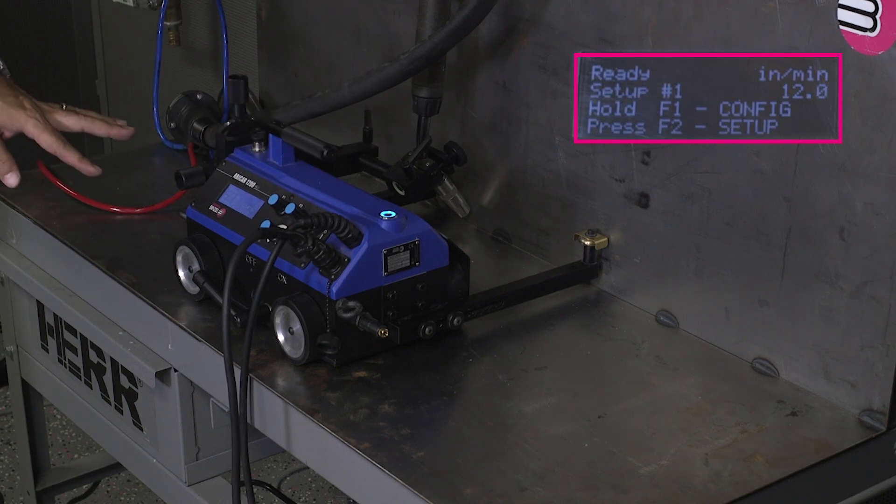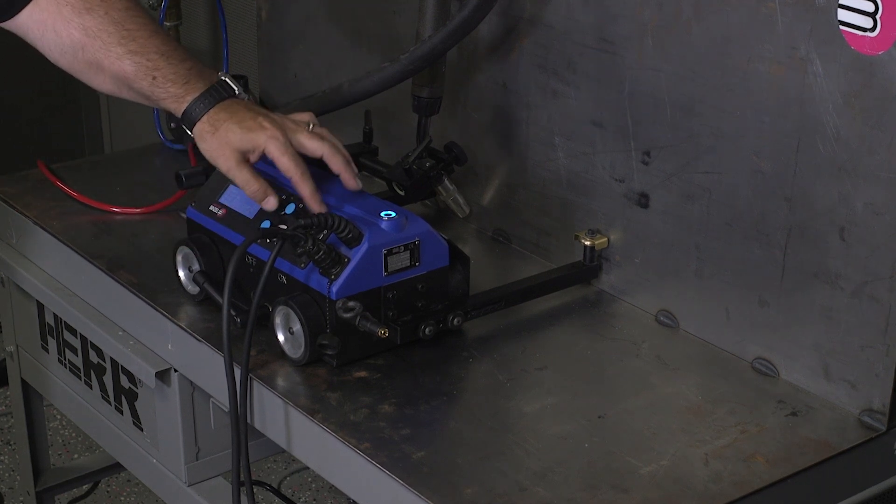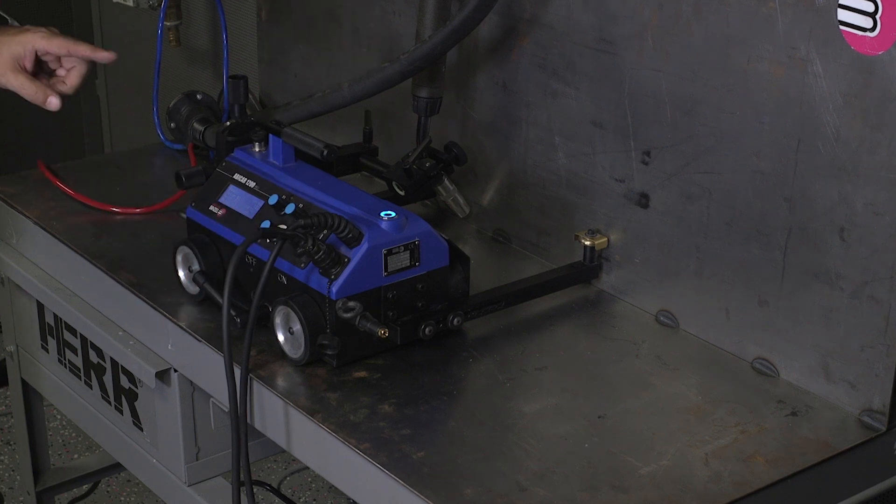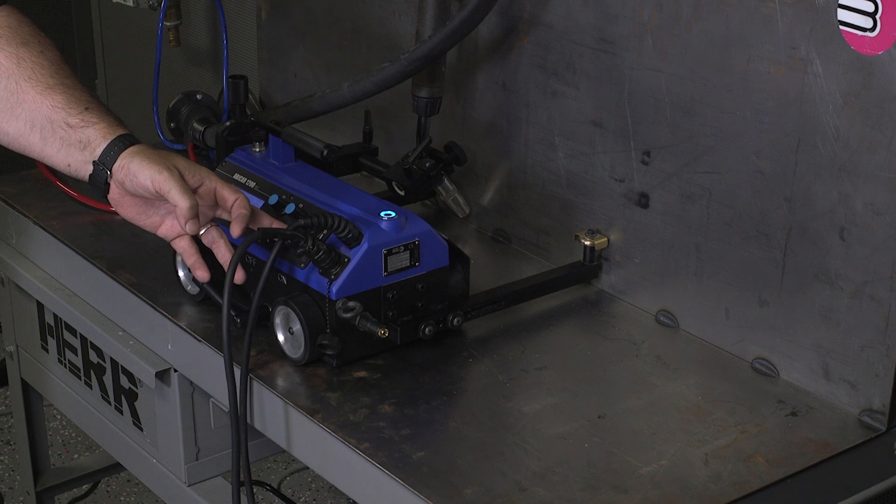Now to execute this three on nine stitch weld, make sure we're in weld. As soon as we click this, it's going to weld for three inches, go to high speed for the skip, and then weld number two. Let's send it on its way.